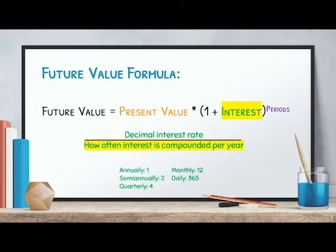Interest can usually be compounded annually, semi-annually which is twice a year, or quarterly which is four times a year. The amount of times interest is compounded per year will be given to you — all you have to do is plug those two numbers into the fraction, and that's your interest rate.